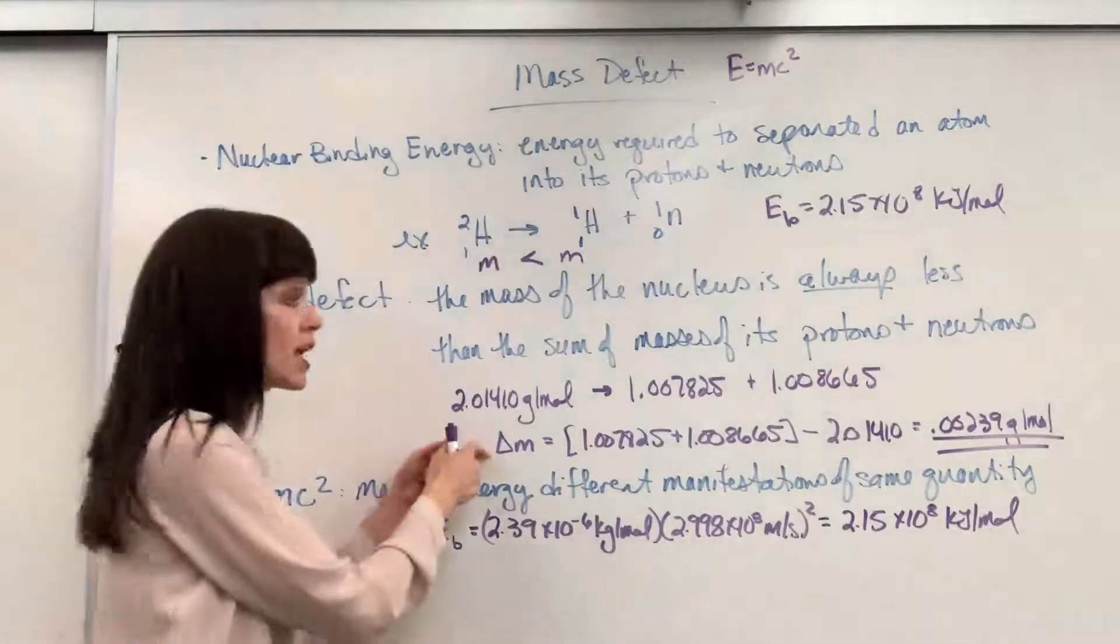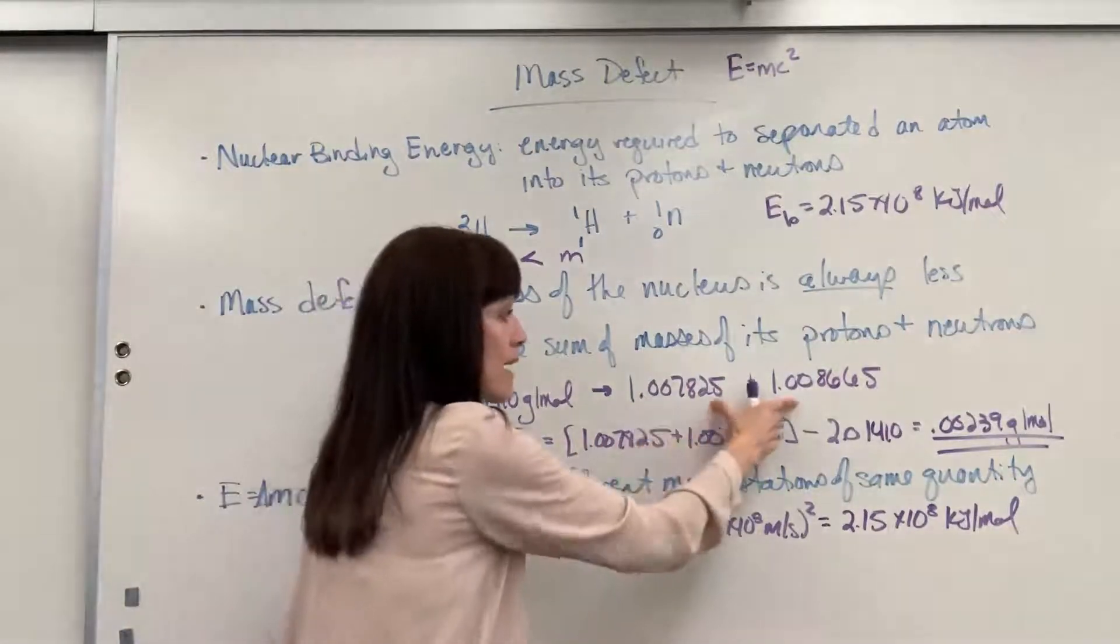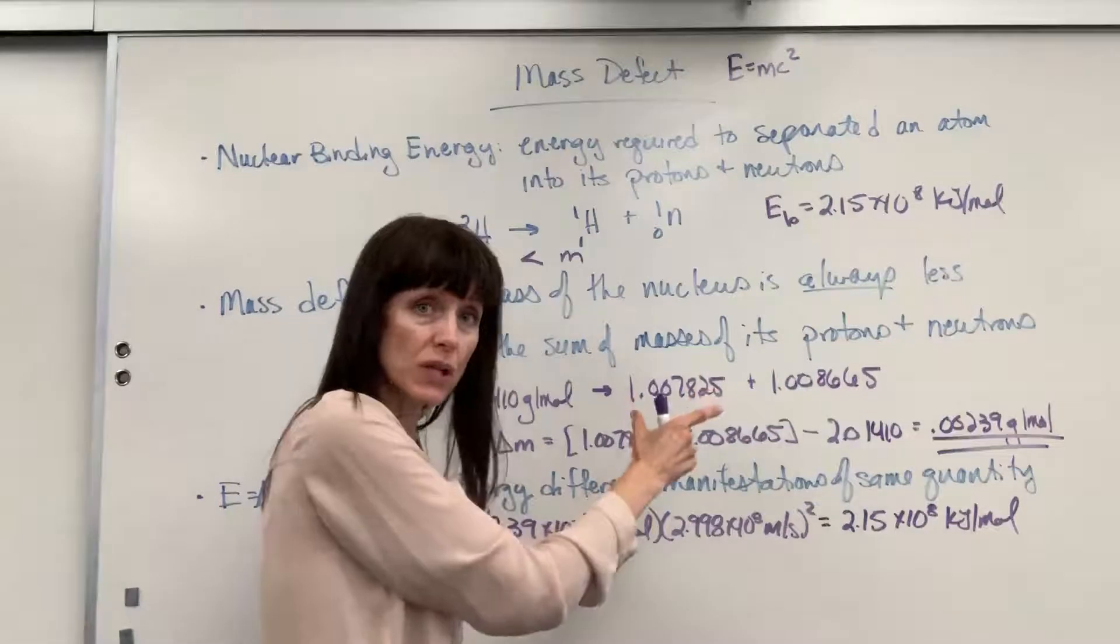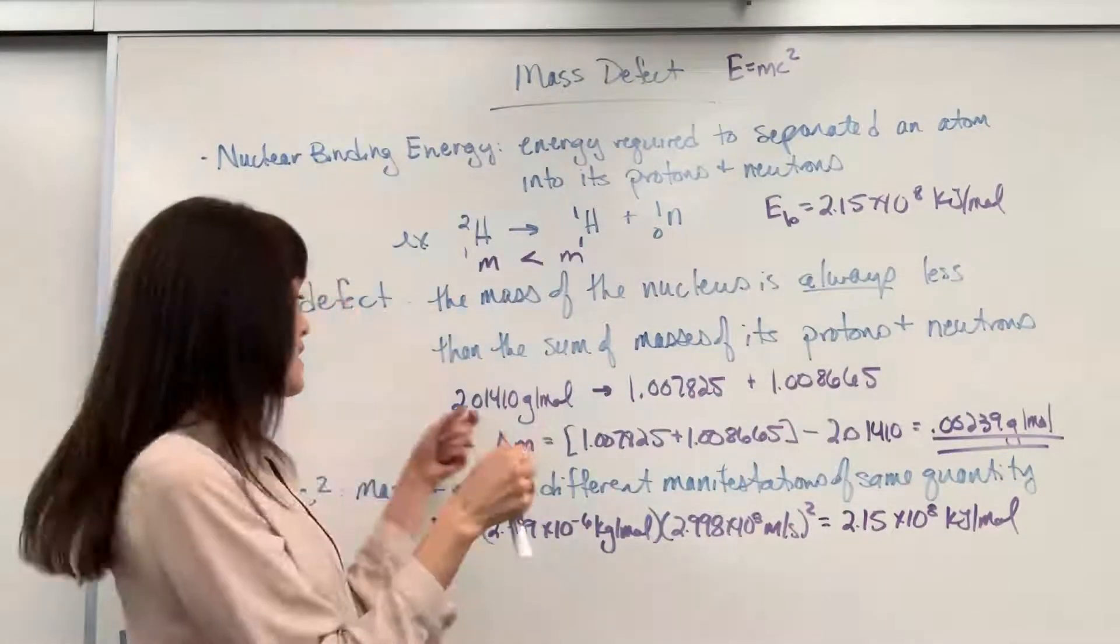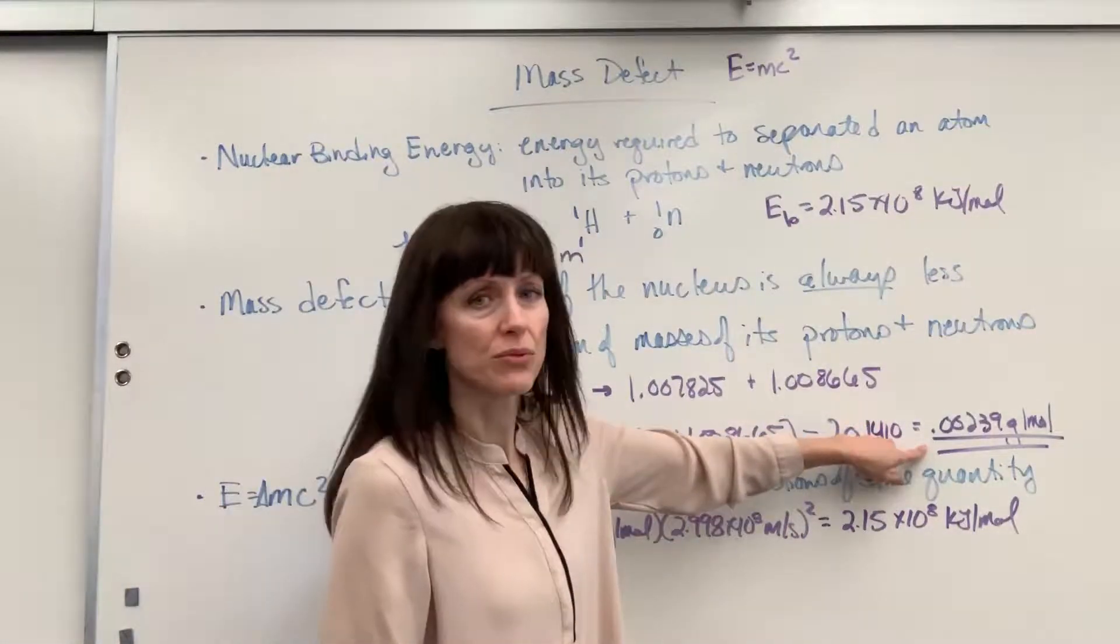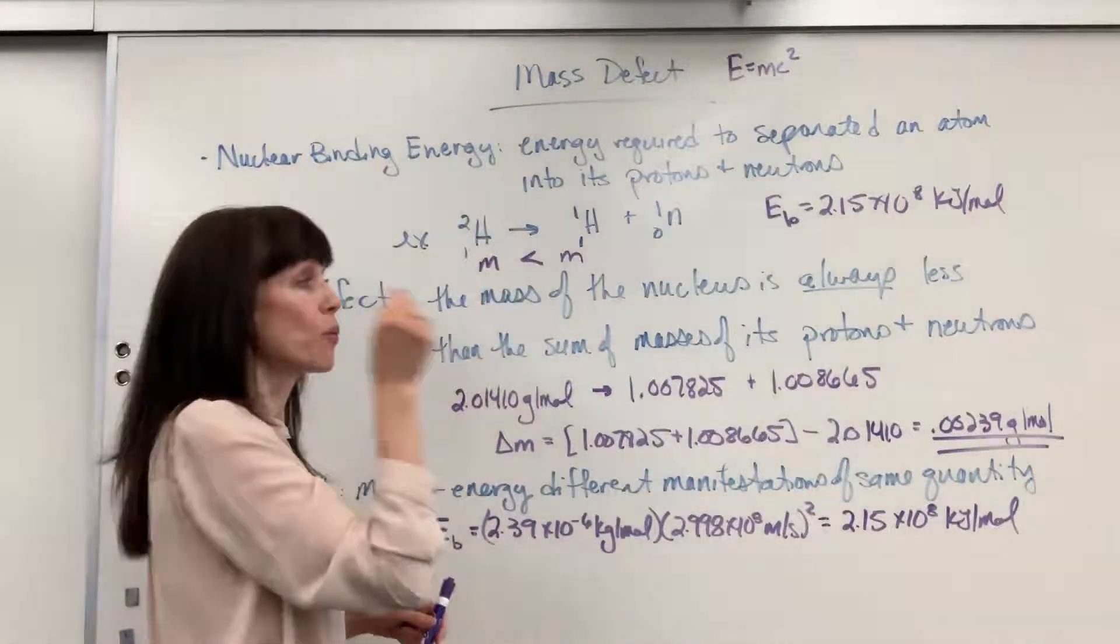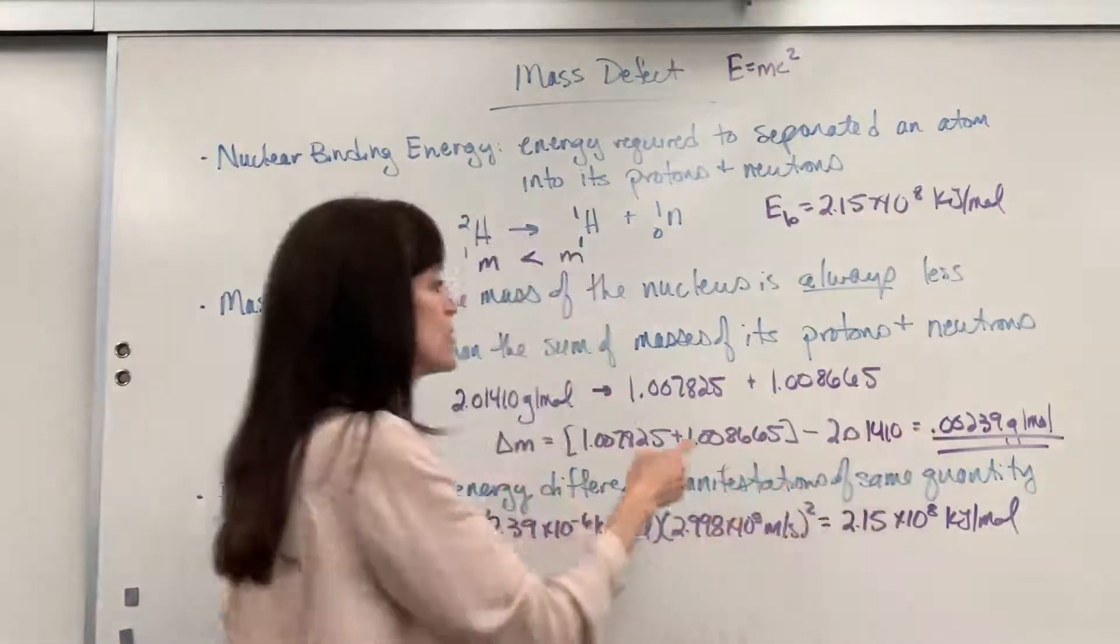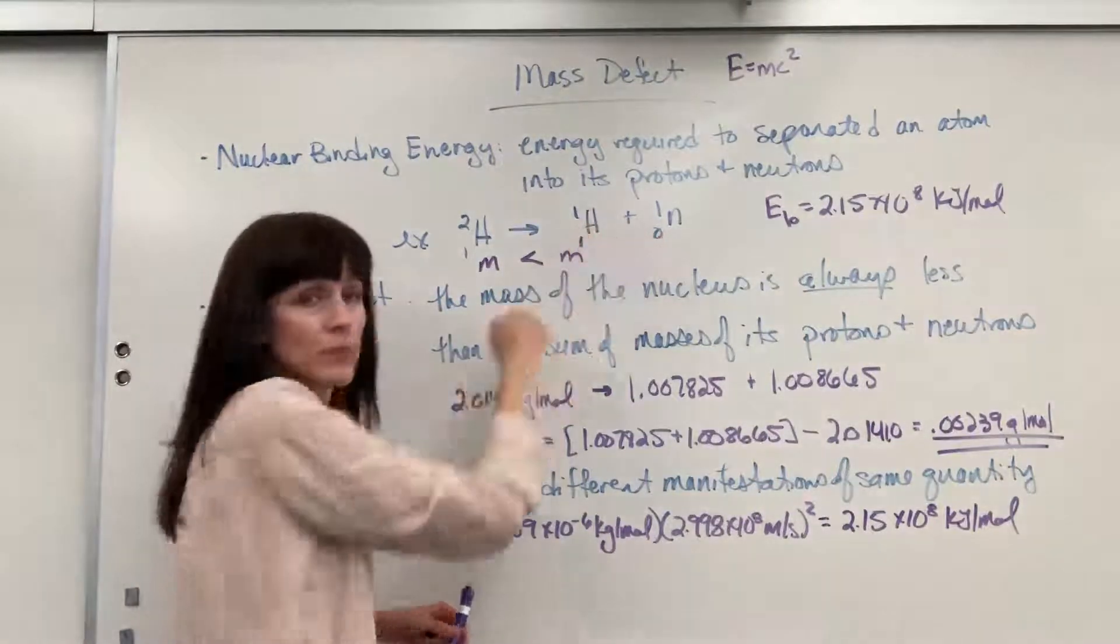Now, if we do the change in mass, so the mass of the product is going to be the mass of the individual proton and neutron minus the mass of those put together as an isotope, this deuterium. The difference is 0.00239 grams per mole. This right here, the deuterium, weighs 0.00239 grams less than the mass of the proton plus the neutron.